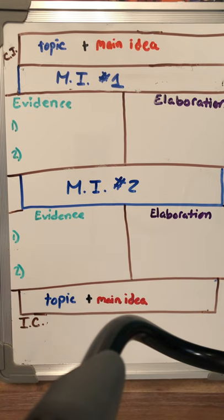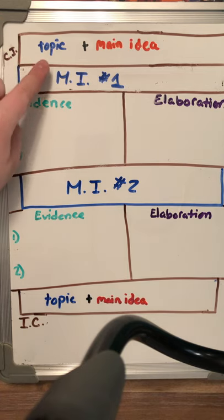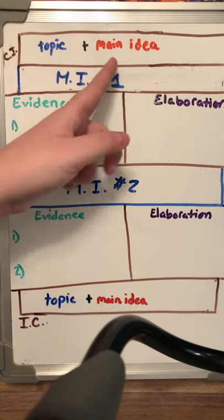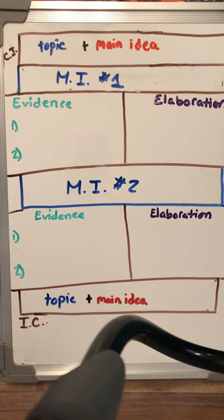As you can see, I have my CI, which is our controlling idea. Our controlling idea should have our topic and the main idea of what this essay is going to be about. So the topic is going to be about cell phones. The main idea is whether or not you're saying that they should be allowed in the school or classrooms, or they should not be allowed in the school or classrooms. So right away, your controlling idea, I should know whether or not you are for or against this opinion essay.